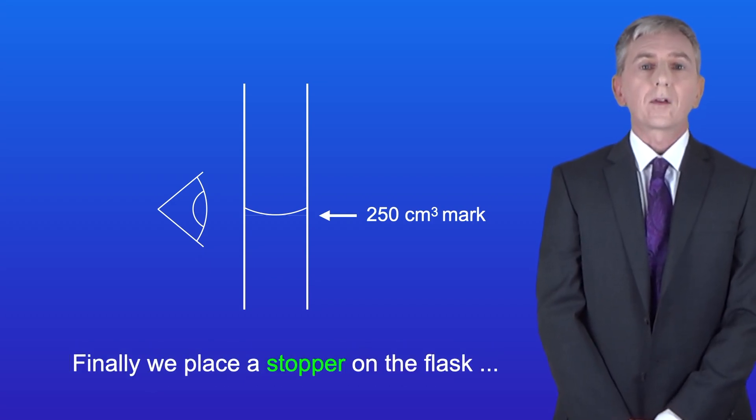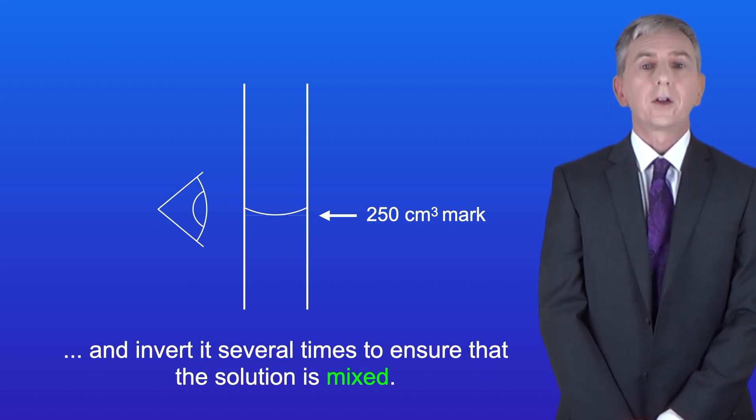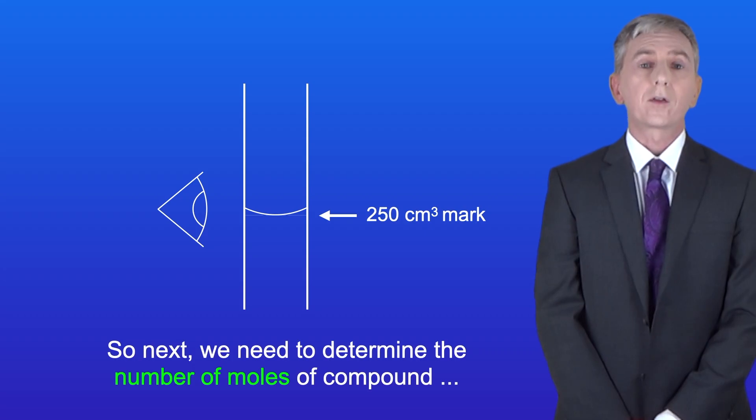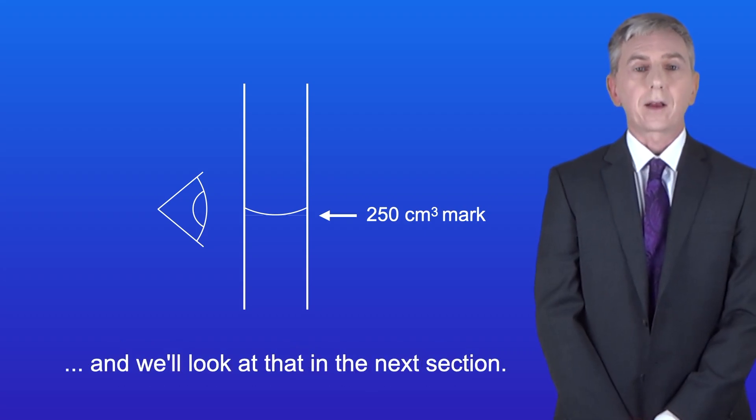Finally, we place a stopper on the flask and invert it several times to ensure that the solution is mixed. So now we've got a solution containing a known mass of our compound. So next, we need to determine the number of moles of compound, and we look at that in the next section.